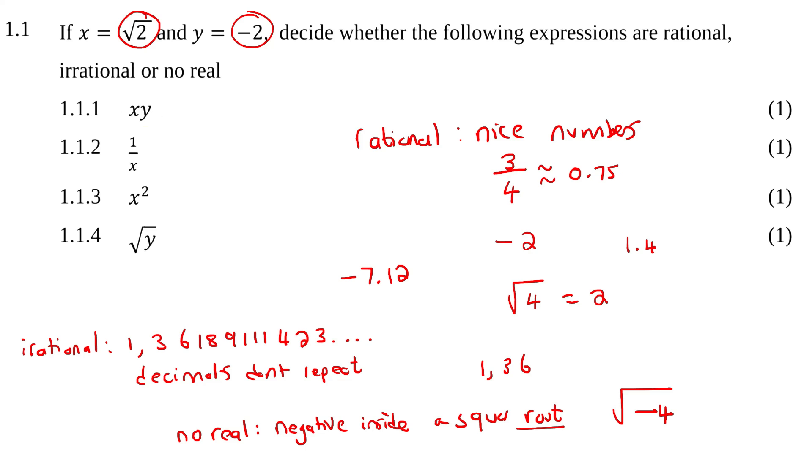For the first one, they said that we just multiply x and y together. So, x is square root 2, and y is negative 2. If you multiply those together, you're just going to get minus 2 square root 2. Now, in decimal form, that is pretty ugly. It's like negative 2.828, and then the decimals don't repeat. It's just random. So, that's definitely going to be irrational. So, this first one is going to be irrational.